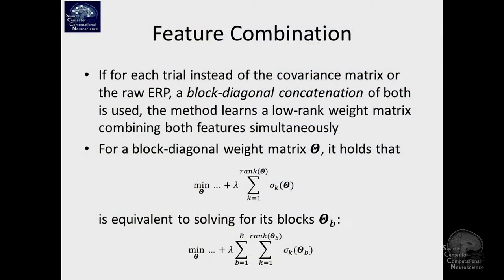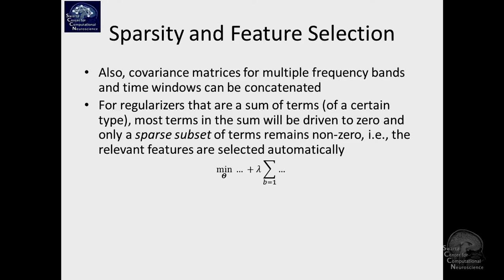And so for this reason, it'll learn a small subset of spatial filters out of your oscillatory block or out of your ERP block. And it'll drive many of these components effectively to zero. So that's why you're learning a sparse subset.